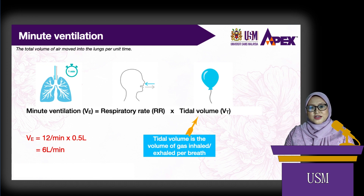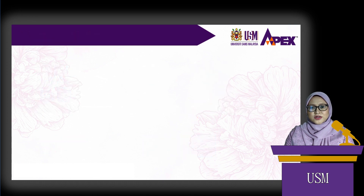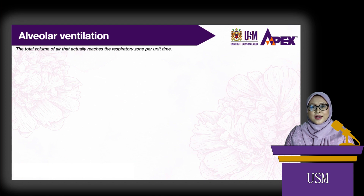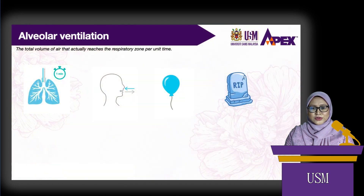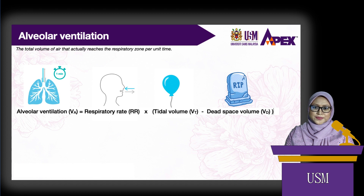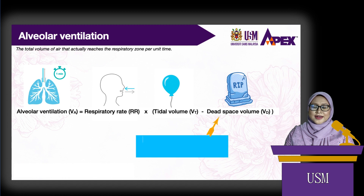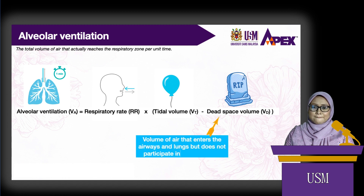Alveolar ventilation is equal to respiratory rate multiplied by tidal volume minus dead space volume. Dead space volume is the volume of air that enters the airways but does not participate in gas exchange.